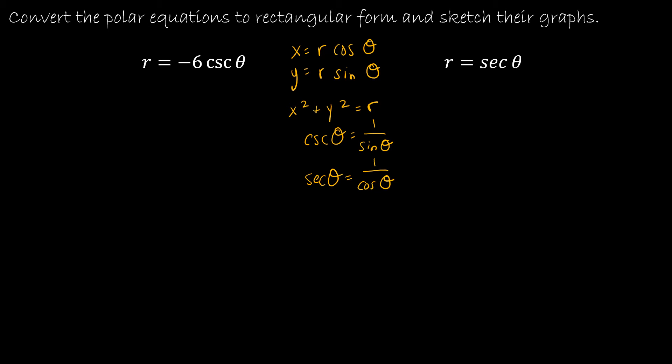So how is this going to be helpful? Well, if I replace cosecant of theta with 1 over sine theta, then I could take each side times sine theta. So I have r sine theta is equal to negative 6. Well, r sine theta is y. So this is just y equals negative 6.